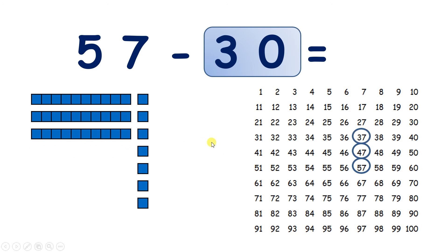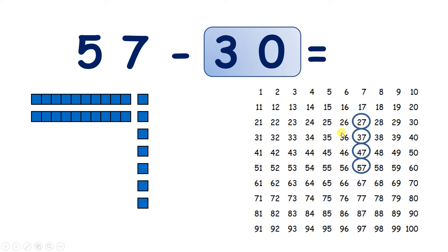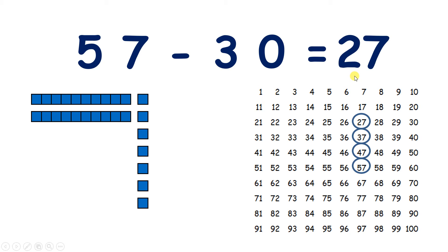Another 10, and we have 37. And one more 10, so we've taken away 3 tens, and we now have 27. So 57 take away 30 equals 27. The 7 units stay the same. But we started with 5 tens, we took away 3 tens, so we were left with 2 tens.